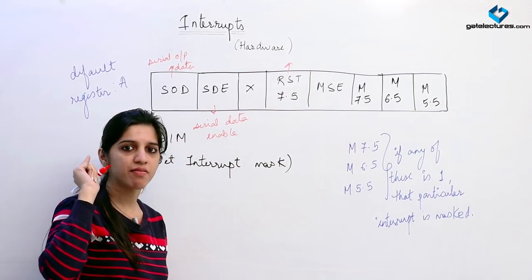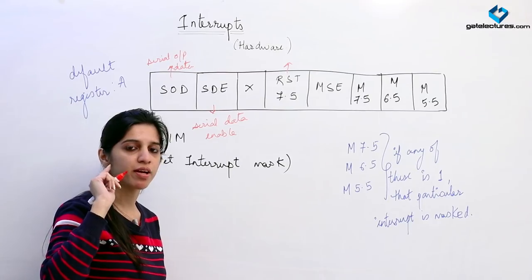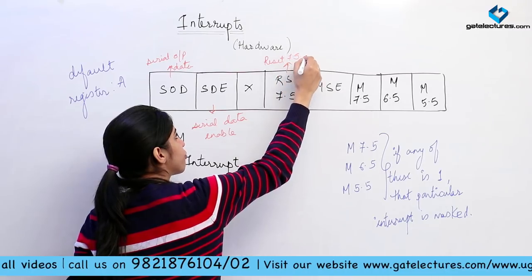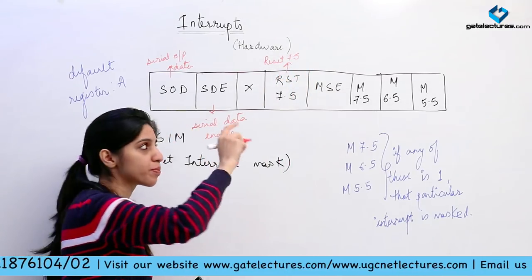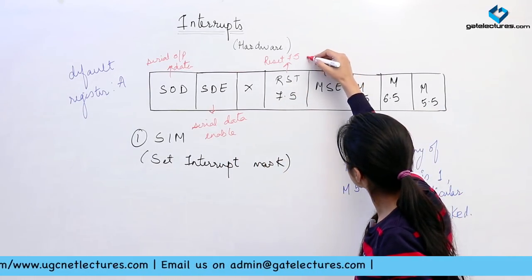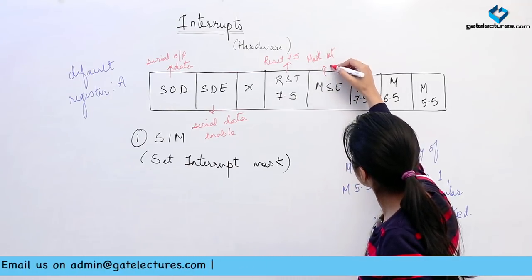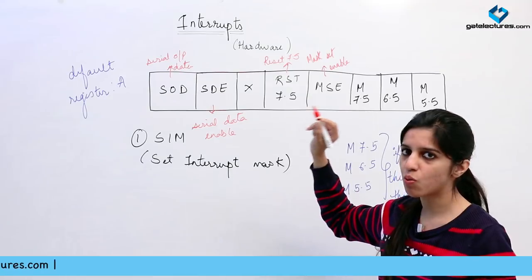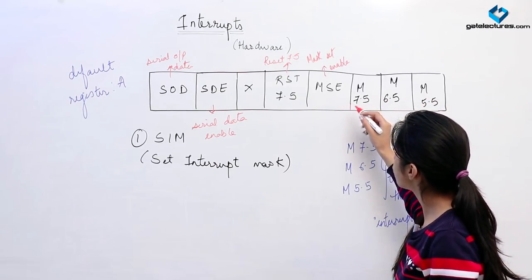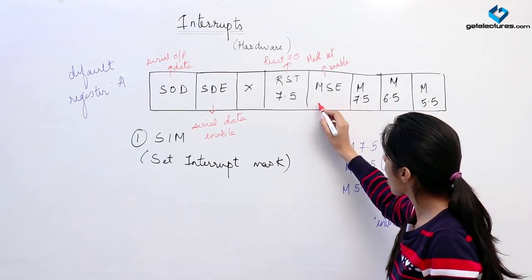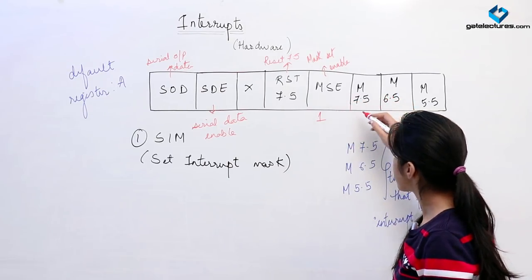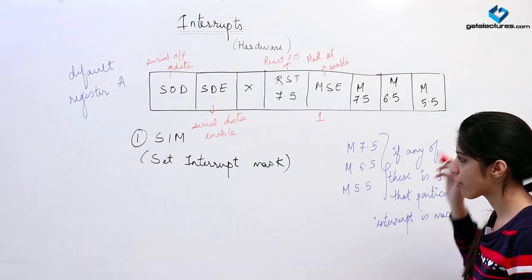Remember that for RST 7.5, there is a D flip-flop with a reset option. Bit 4 resets the 7.5 flip-flop. The MSE (Mask Set Enable) bit must be set to 1 whenever you want to mask any of the interrupts — 7.5, 6.5, or 5.5. The mask bits M7.5, M6.5, and M5.5 control which interrupts are masked.